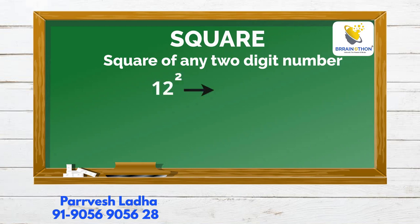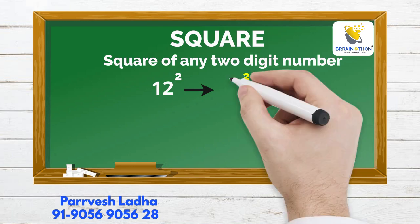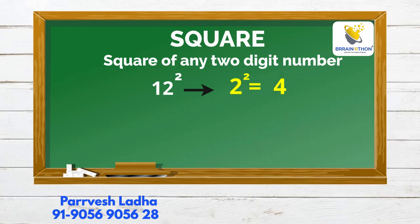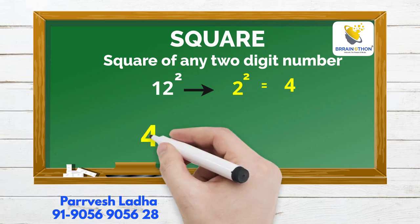For example, 12-squared. First, we have to square the first digit: 2-squared is 4. We write 4.